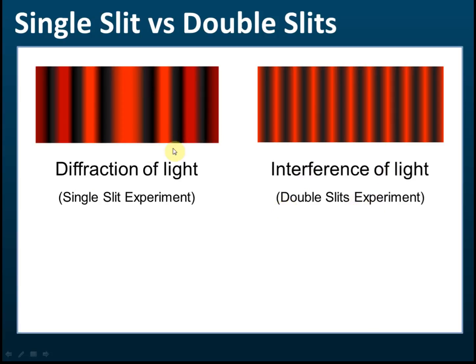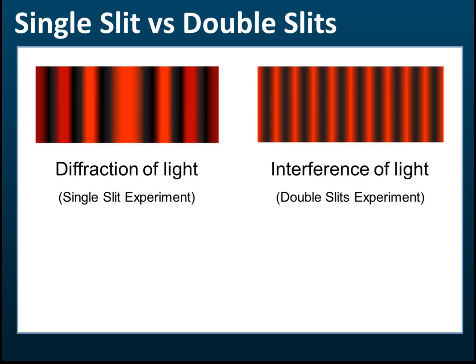These are the patterns of the single slit experiment, and these are the patterns of the double slit experiment. For interference of light, the distance between the fringes is uniform. But for diffraction of light, the size of the fringes is not uniform and the distance between fringes is also not uniform — there is a very bright, wide fringe in the middle, and the fringes become smaller and smaller away from the center. Make sure you know the difference, because in the exam they may give you several fringe patterns and ask which one is the result of a single slit experiment and which is the result of a double slit experiment.